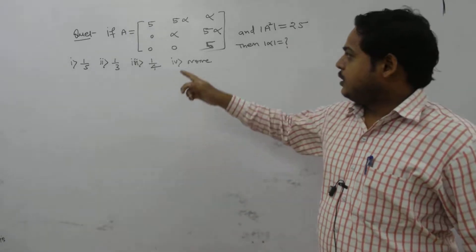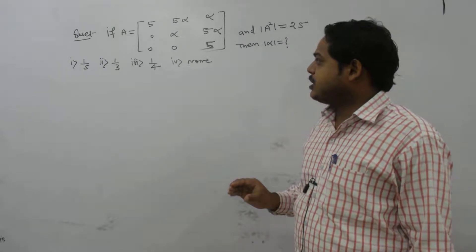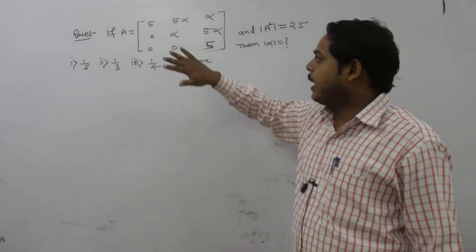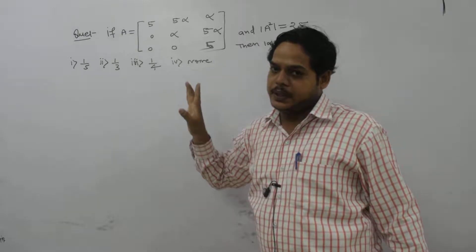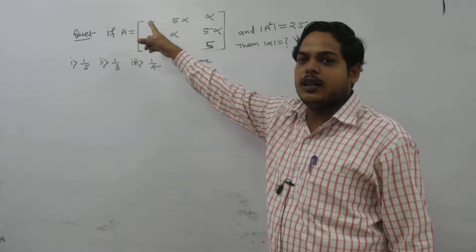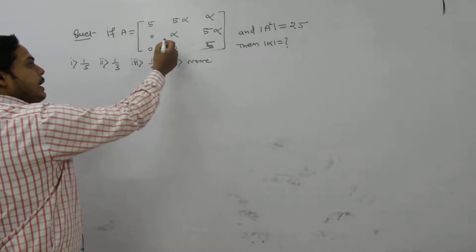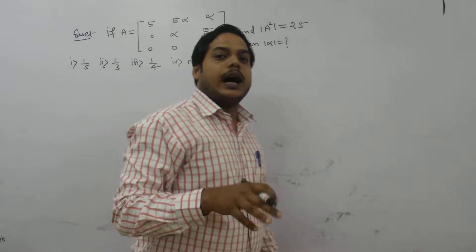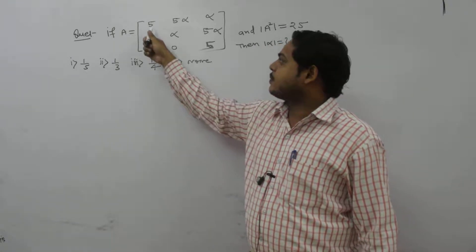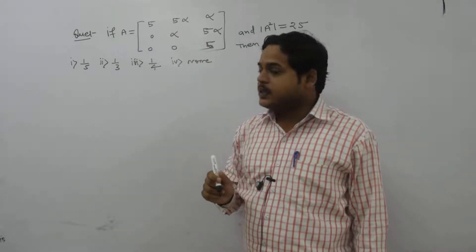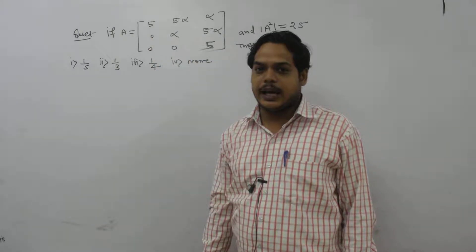It is clear that the given matrix is an upper triangular matrix. A matrix is said to be upper triangular if all entries below the principal diagonal must be zero. There is no condition on the principal diagonal and upper side entries. If our matrix is upper triangular, lower triangular, or diagonal, then its eigenvalues are its principal diagonal elements — so the eigenvalues of this matrix are 5, alpha, and 5.